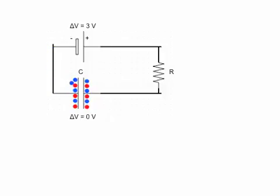Current starts flowing, so we have electrons coming out of the battery. As they come around, they're going to start to pile up on the left plate of the capacitor. There's a gap between the two capacitor plates, and the electrons can't hop across that gap. So we get negative charges building up on the left side of the capacitor plate, and as that negative charge builds up, they push the electrons off of the right side of the plate. We're building up a net negative charge on the left side and a net positive charge on the right side of the capacitor, and as this happens, the voltage difference across the capacitor is increasing.